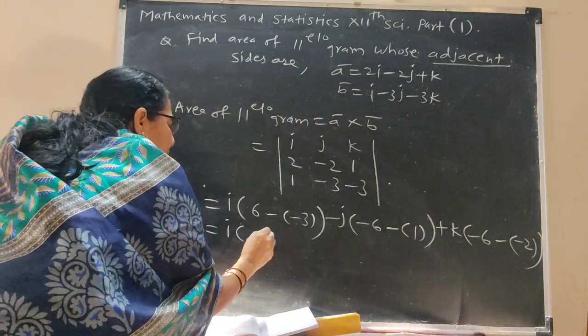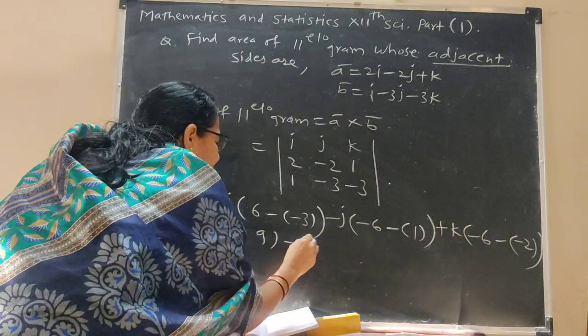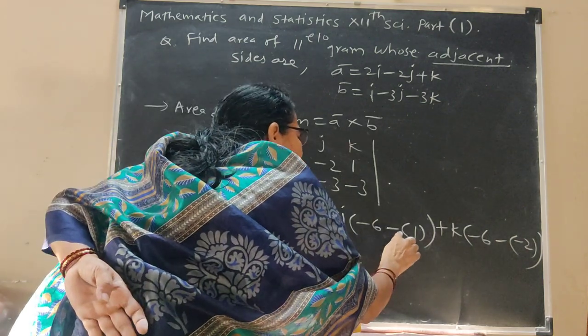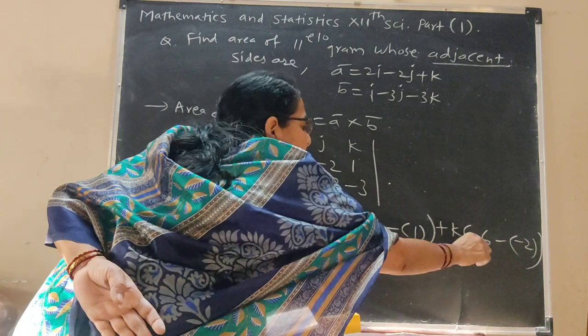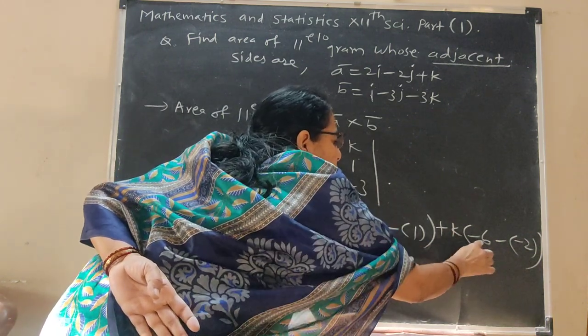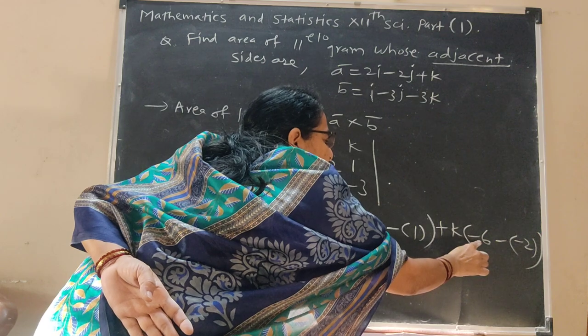This gives us 9 for the i component, minus j: this is minus 6 minus 1 equals minus 7. Now k: minus 6 minus 4.